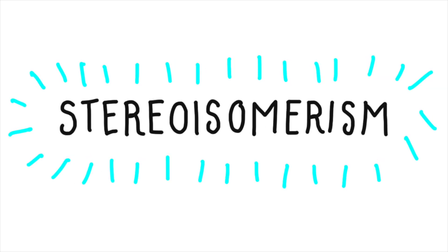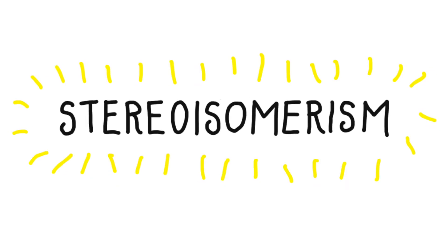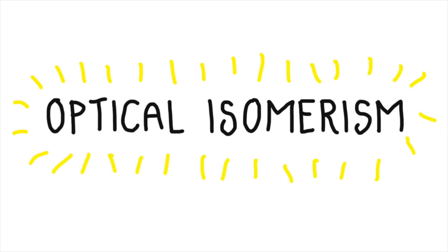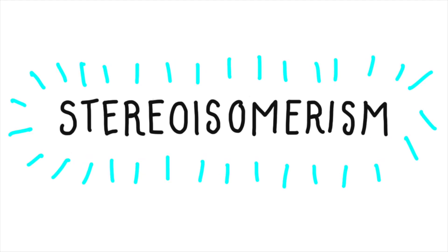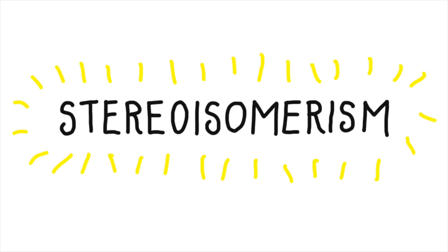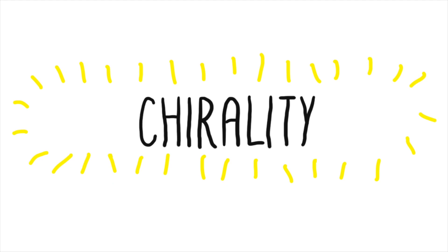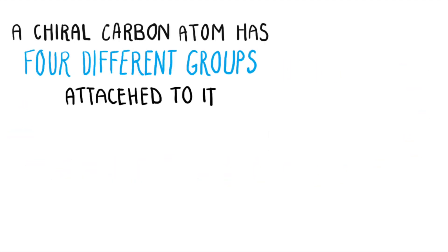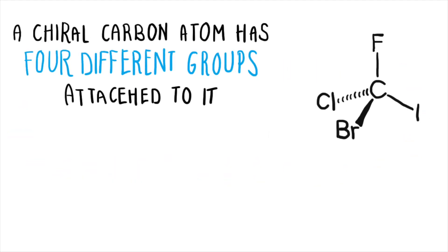The left and right versions of thalidomide are optical isomers. This is a type of stereoisomerism. A chiral carbon atom is one that has four different groups attached to it, as seen here in bromo-chlorofluoroiomethane.